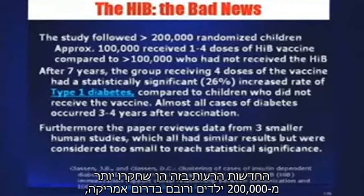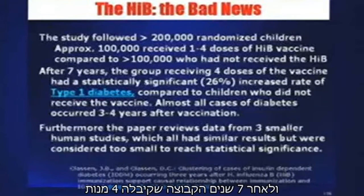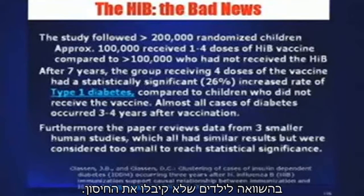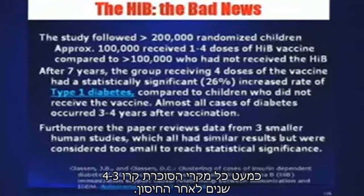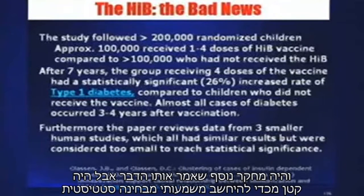The bad news is that they studied over 200,000 kids — most of this was done in South America — and they looked at children who had somewhere between one and four doses of the HIB vaccine. After seven years, the group receiving four doses had a statistically significant increased rate of type 1 diabetes compared to children who did not receive the vaccine. Almost all cases of diabetes occurred three to four years after vaccination. There was another paper that said the same thing, but it was too small to have statistical significance.